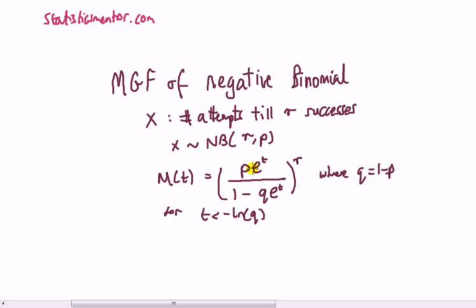Again, depending on how you define the random variable, because for geometric, x is the number of successes until this number of goes until the first success or number of failures until the first success. In any case, the point to note is that this MGF of a negative binomial is related to the MGF of a geometric.